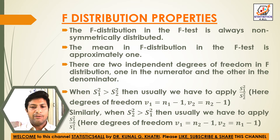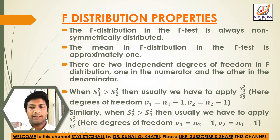The shape of the F distribution depends on its parameters V1 and V2, that is the degrees of freedom. Similarly, when S2 square is greater than S1 square, then usually we apply S2 square divided by S1 square.